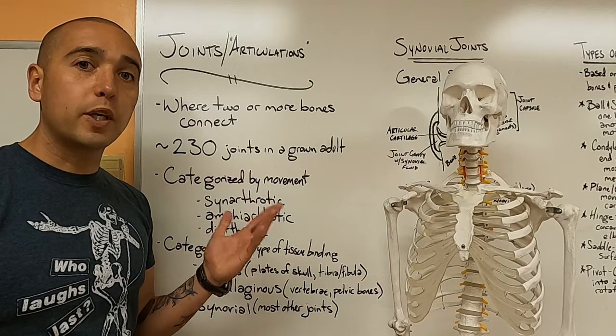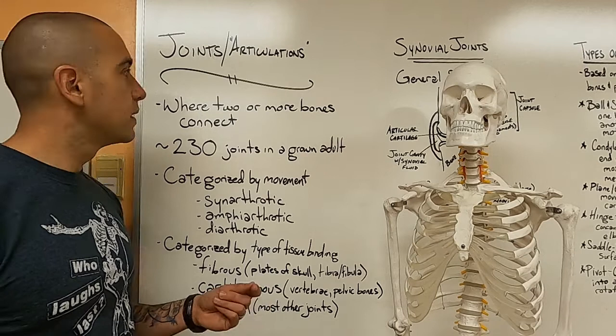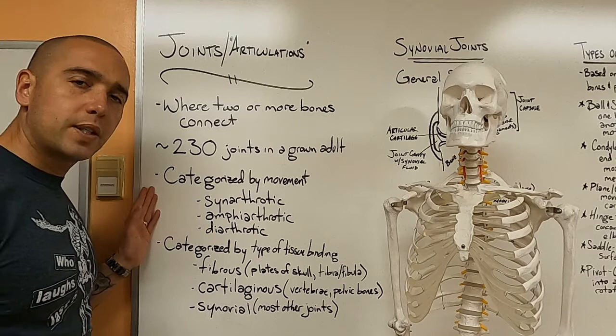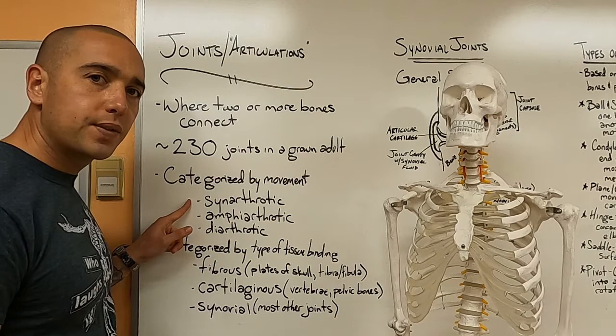So to start off, joints, the technical word for them is articulations. They mean the same thing. And a joint or an articulation is really anywhere where two or more bones connect or meet. There are approximately 230 joints in an adult body or places that bones meet. They're sometimes categorized by their degree of movement, but more recently anatomists classify them by what holds the joint together.